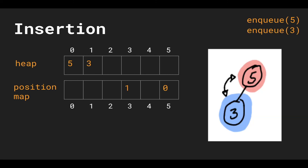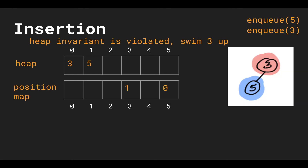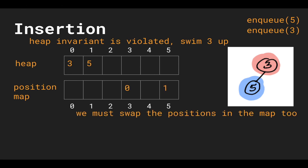Let's say we enqueue 3. We're going to push it at the end of our heap array, but now the heap invariant is violated because 3 is less than 5, and this is a min heap. So we're going to swim 3 up. Our heap invariant is now satisfied, but our position map is no longer accurate — 3 is not at index 1 anymore, and 5 is not at index 0. Because we swapped the positions in our actual heap, our position map also has to swap its recordings of the position. So we're going to swap 1 and 0 in the position map. Now 3 is at index 0, so the position map at index 3 holds 0, and likewise for 1 and 5.